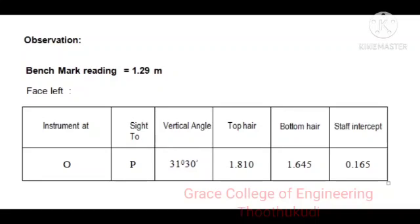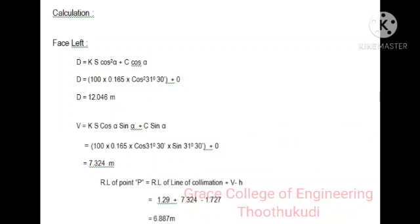Calculation in face left condition: D = KS cos²α + C cosα. So we substitute the values given in the observation. D = 100 × 0.165 × cos²(31°30') + 0. The additive constant is zero. Then D = 12.046 meters.